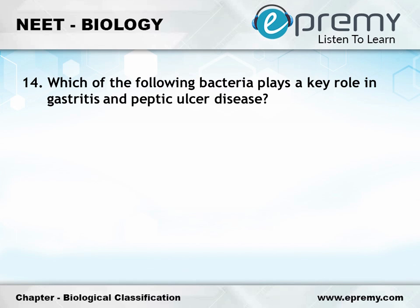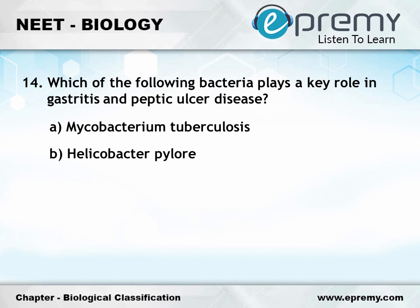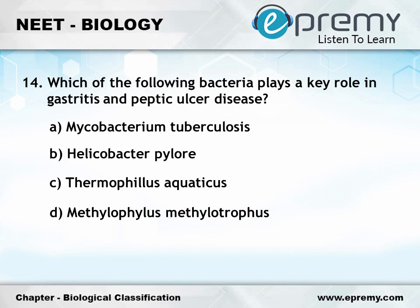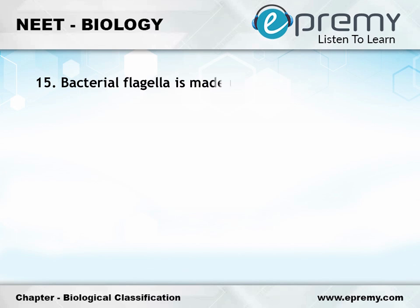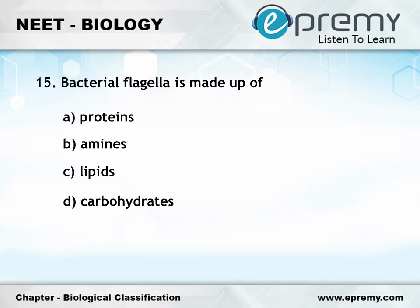Question number 14: Which of the following bacteria plays a key role in gastritis and peptic ulcer disease? Option A: Mycobacterium tuberculosis; Option B: Helicobacter pylori; Option C: Thermus aquaticus; Option D: Methylophilus methylotrophus. The answer is Option B, Helicobacter pylori. Question number 15: Bacterial flagella is made up of — Option A: proteins; Option B: amines; Option C: lipids; Option D: carbohydrates. The answer is Option A, proteins.